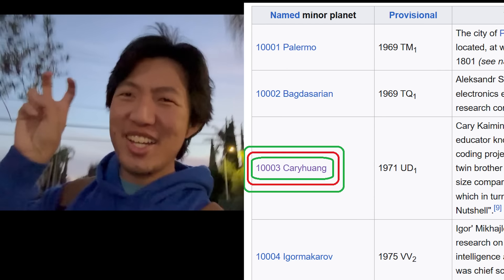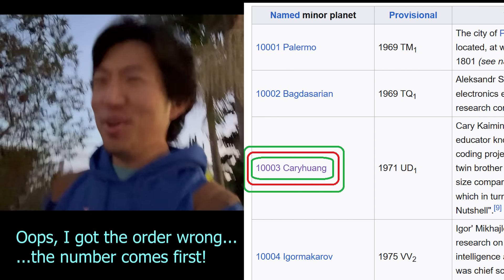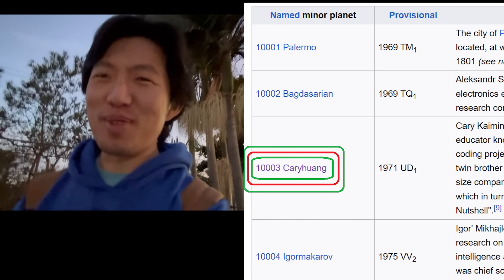Hi everyone, it's me, Kari. So I'm on a bit of a walk right now, but I wanted to talk about this topic that I've been hearing murmurs about for a couple years. And what is that topic? Well, there's this planet that's orbiting the sun right now up there in outer space, and that planet is named Kari Huang 10003. Like what? How did this happen? It has the same name as me.